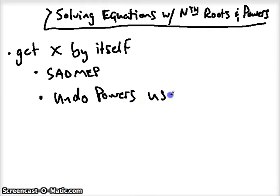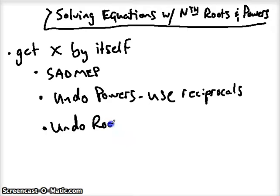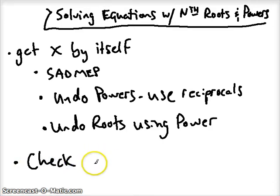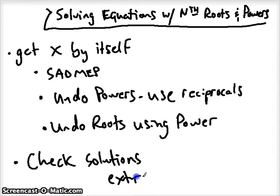To undo powers, we use reciprocals. If we're dealing with fractional powers, use the reciprocal to undo it. We can undo roots using powers. So whatever root it is, undo it using the same power. And then we're always going to do this last step. It's important in dealing with radicals and fractional exponents that we check our solutions. And we're going to check for things called extraneous solutions. They're false solutions. Things that come out when we solve that we think may be solutions, but when we check it, they end up not really working, so we can't use them.